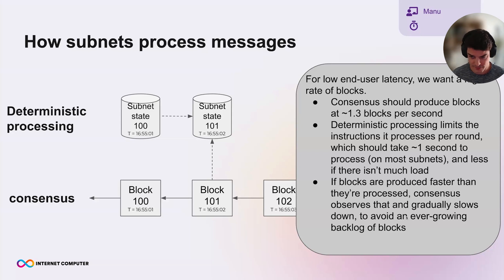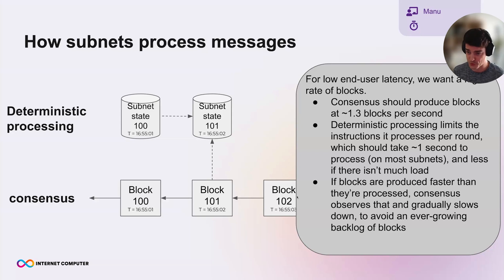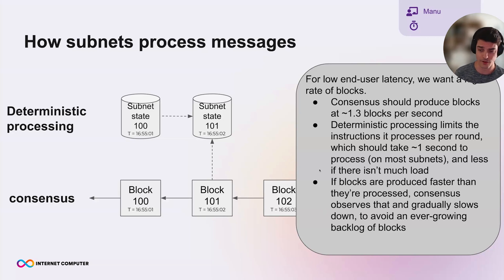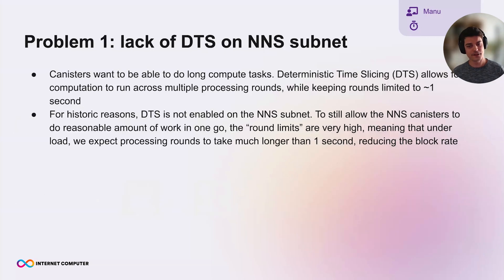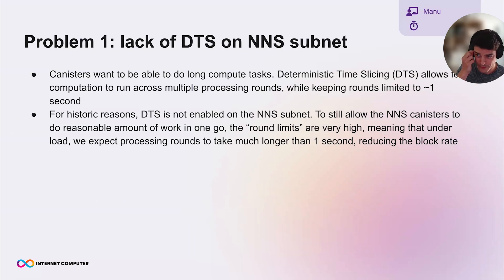If blocks are produced faster than they can be processed, consensus can observe the backlog and dynamically slow down to avoid an ever-growing blockchain without it being processed. That was a quick recap of how things work — now we'll get into the three problems that enabled the incident we saw on Friday.